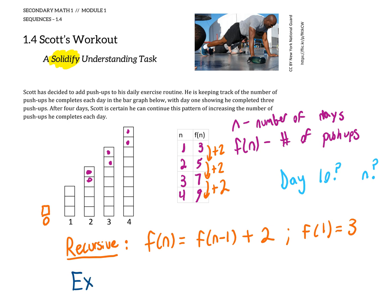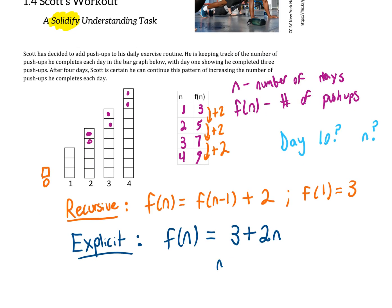To write the explicit formula, we can see that we started with three push-ups on the first day. We might be tempted to write 3 + 2n because it's growing by two. But if we test that out, plugging in n=4, we get 3 + 8 = 11 push-ups, which is not accurate. We know he did nine push-ups on the fourth day. The reason it's not working is because we're starting on the first day and not the zeroth day, so we have to make this adjustment to n minus one.